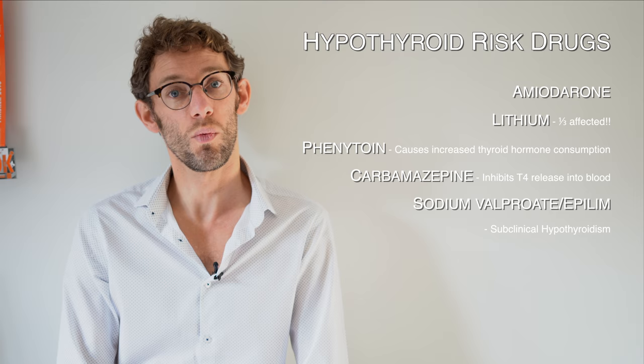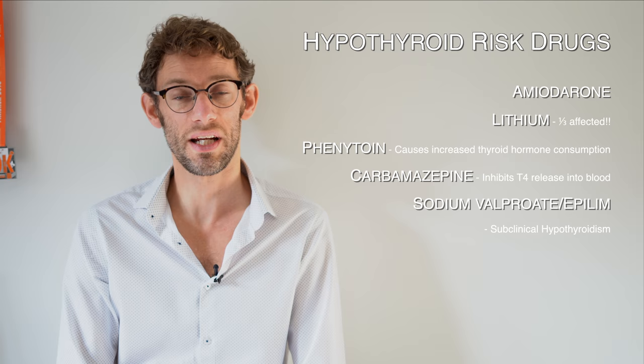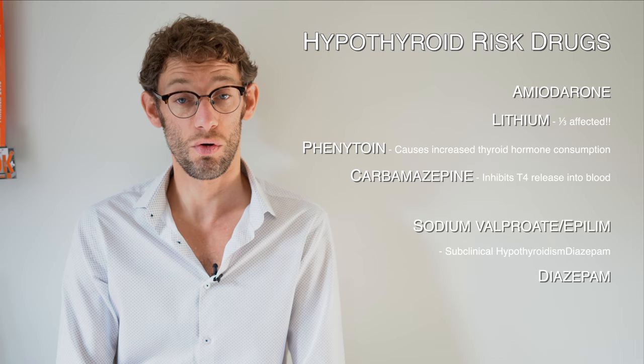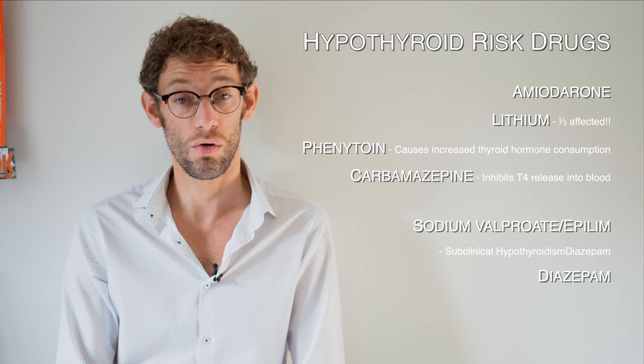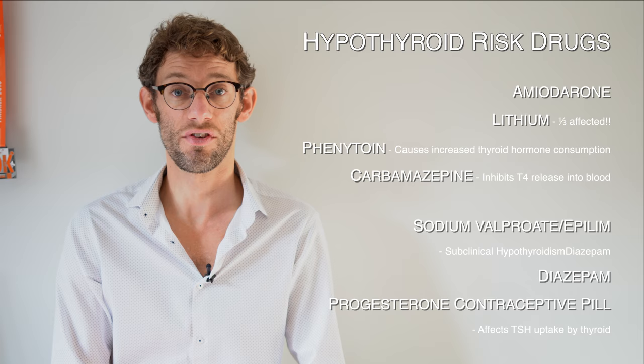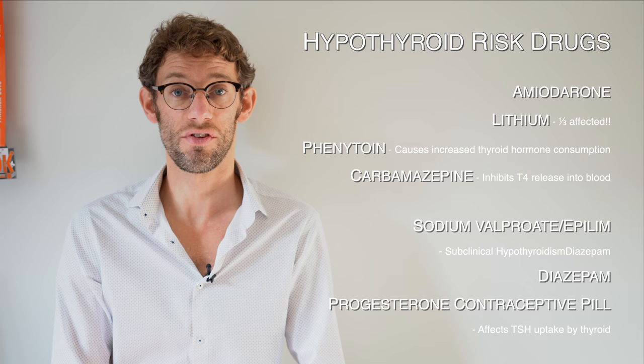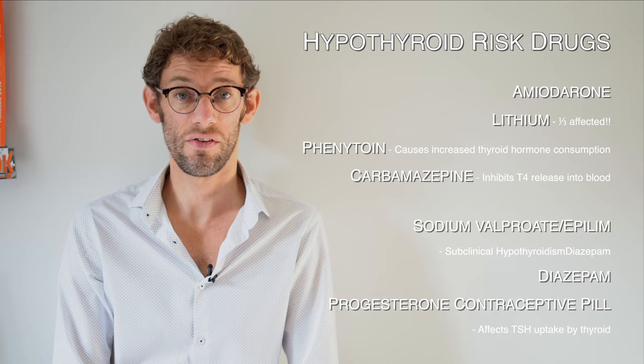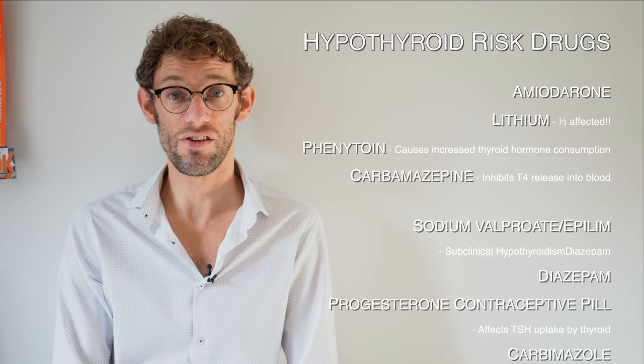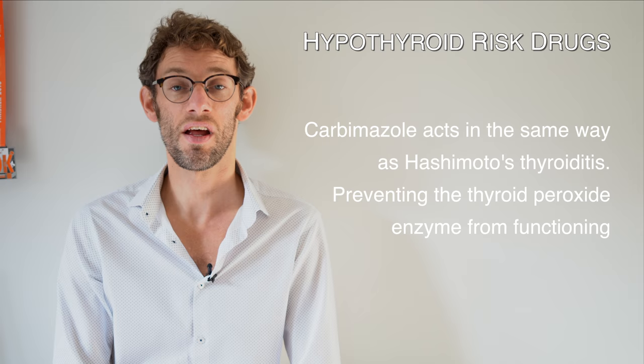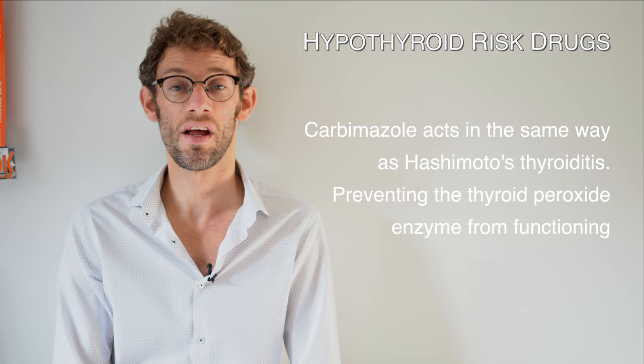With subclinical hypothyroidism from sodium valproate, we see biochemical evidence in blood results but the patient doesn't normally have symptoms. Diazepam can also cause hypothyroidism. The progesterone-only pill can affect TSH uptake, meaning the gland isn't as responsive to signals to produce thyroid hormone. Finally, the most important medication causing hypothyroidism is carbimazole — used intentionally to ratchet down the thyroid in hyperthyroid patients — so we must ensure it isn't given accidentally.